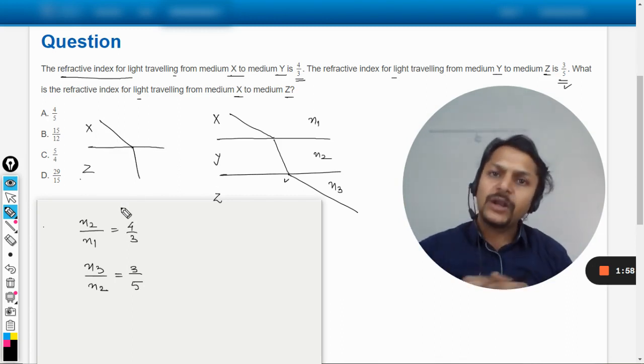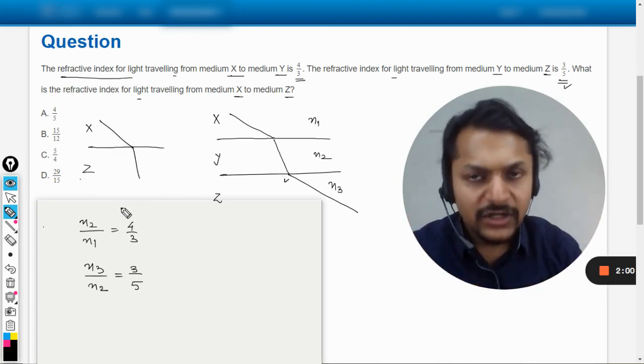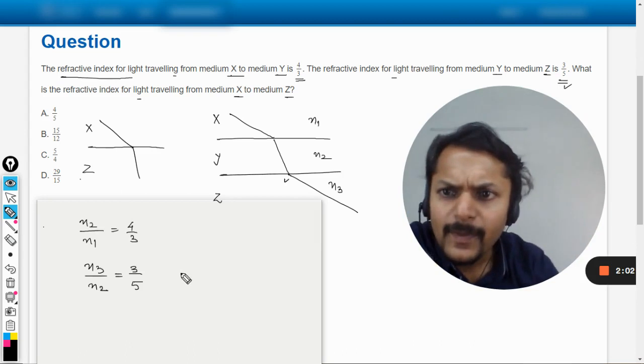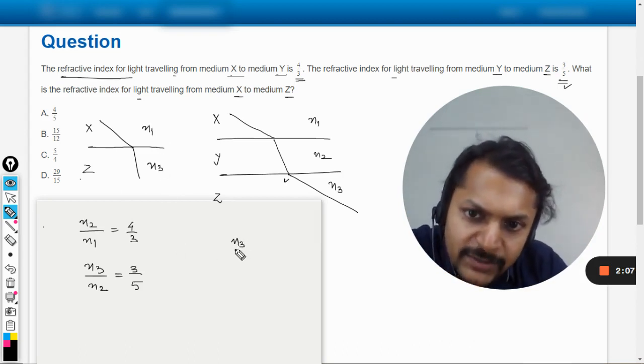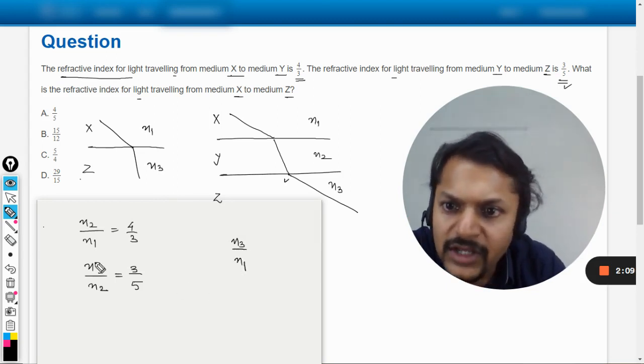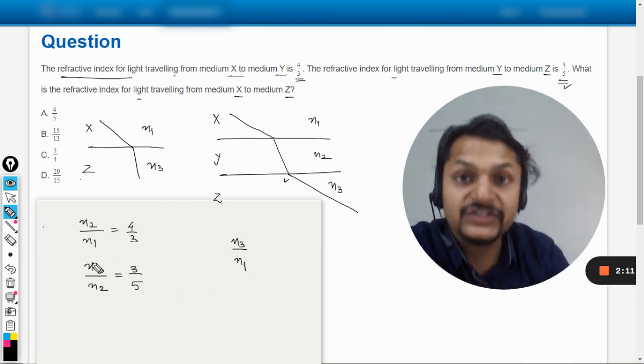So what will be the net refractive index? This will be n3 and n1, so that answer will be n3 divided by n1. So how can we find n3 by n1? By substituting n2 or by multiplying these two.